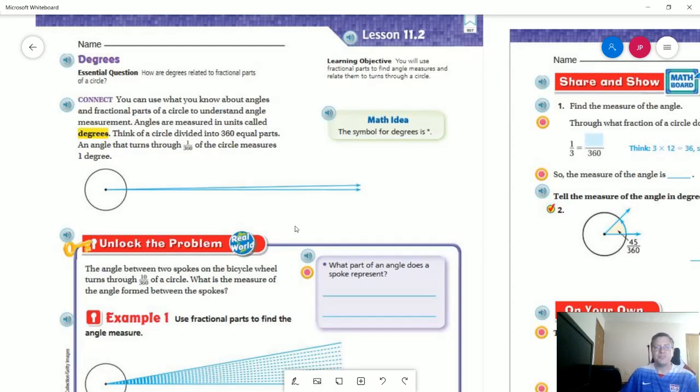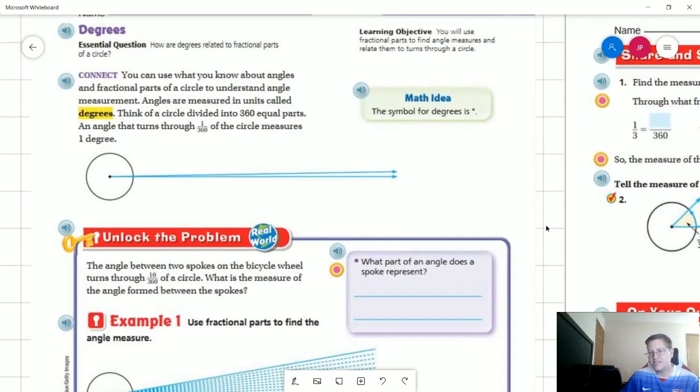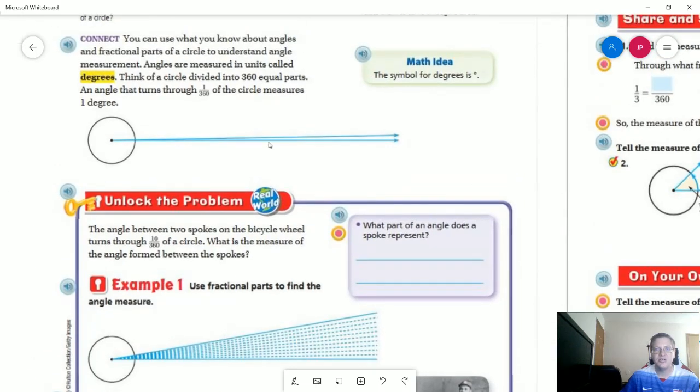So to start with we need to understand the idea that when we're working inside a circle, we are going to have 360 equal parts. Now if you think about it we have 60 minutes on a clock, so each of those minutes would be broken into even six more smaller pieces to get up to 360.